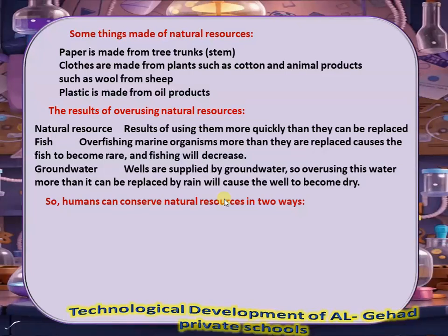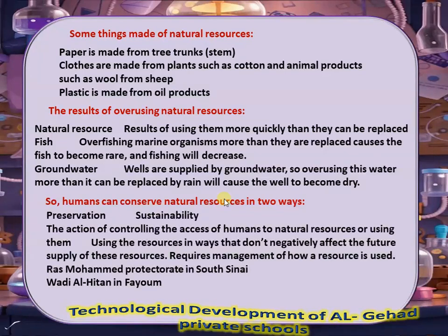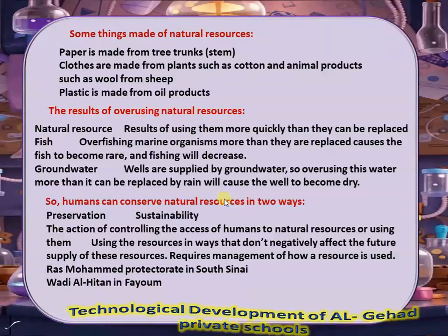Humans can conserve natural resources in two ways: reservation and sustainability. Reservation is the action of controlling the access of humans to natural resources, or using the resources in ways that don't negatively affect the future supply. These involve management of how resources are used, like Ras Muhammad, Protectorate in South Sinai, and Wadi Al-Hitain in Fayoum.